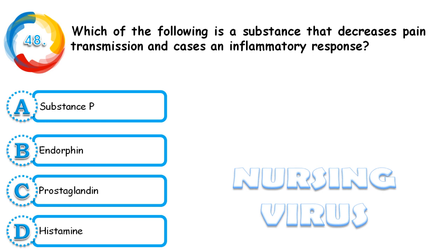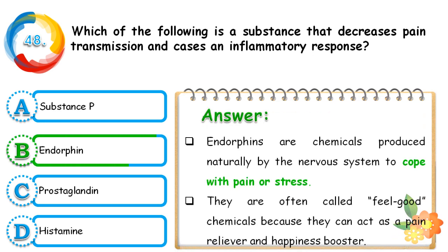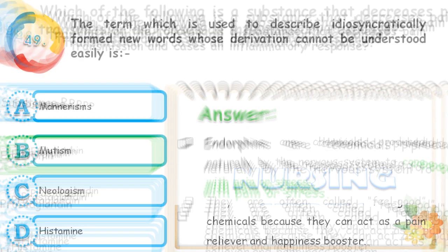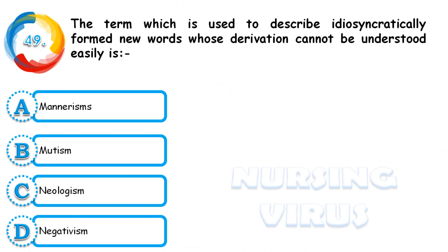Question 48: Which substance decreases pain transmission and causes an anti-inflammatory response? Options are substance P, endorphin, prostaglandin, and histamine. The correct answer is endorphin. Endorphins are chemicals produced naturally by the nervous system to cope with pain and stress. They are often called 'feel-good chemicals' because they act as pain relievers and happiness boosters.